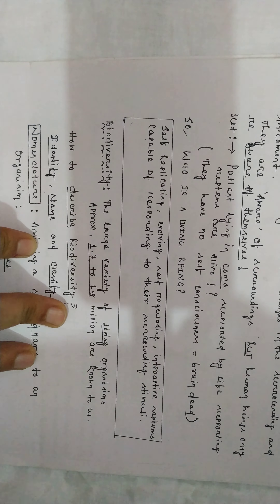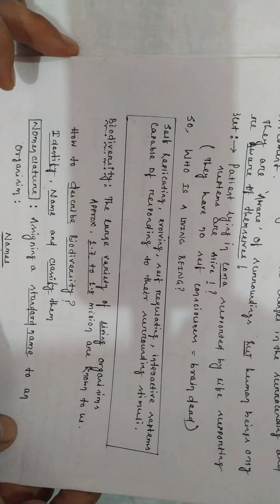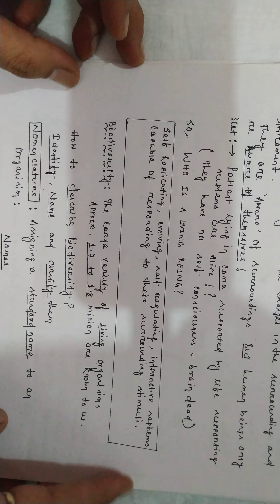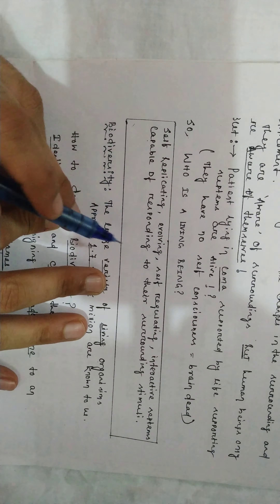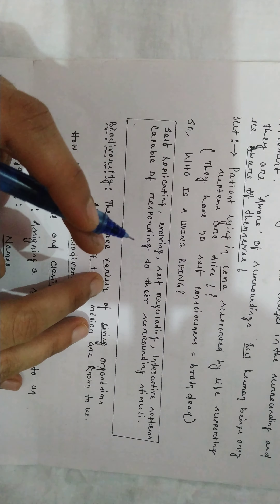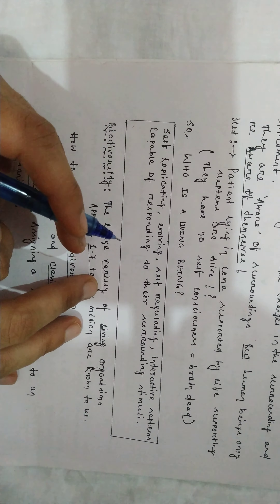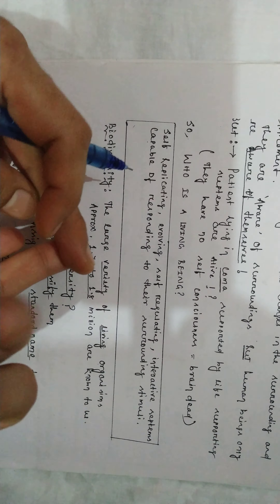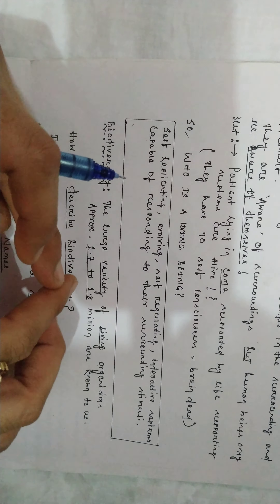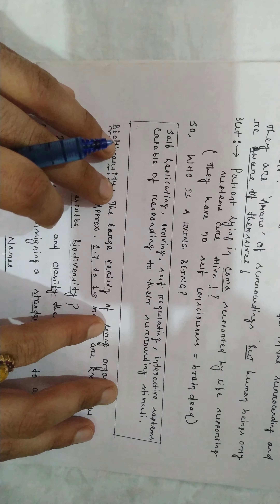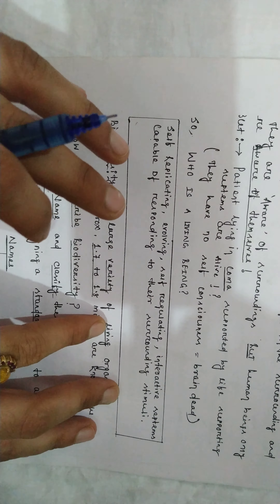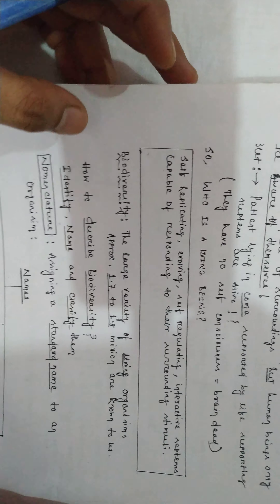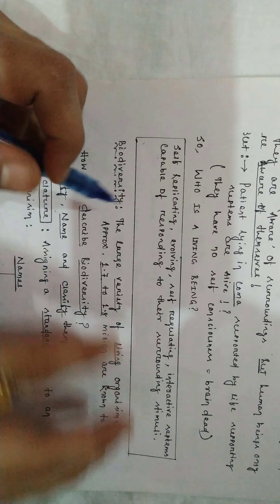Good morning students. In the previous lecture I was dealing with the properties of living beings. Now I'm going to deal with the definition of a living being. When you deal with properties of living beings — growth, lifespan, reproduction, metabolism — individually they are not a defining property for living beings. So now, what is a living being?